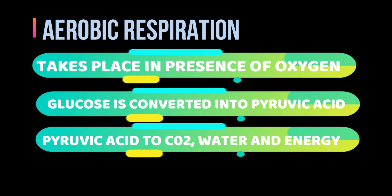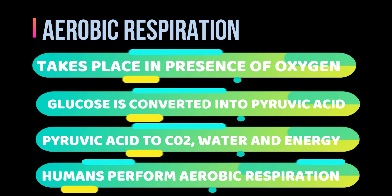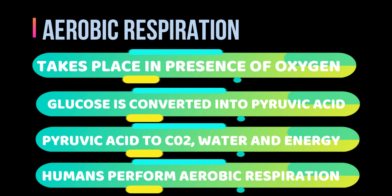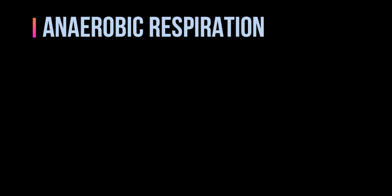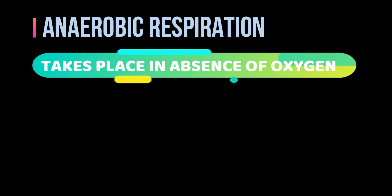This type of respiration occurs in most organisms — in humans, aerobic respiration takes place. Now the second type of respiration is anaerobic respiration: the type of respiration in which the breakdown of glucose occurs in the absence of oxygen.